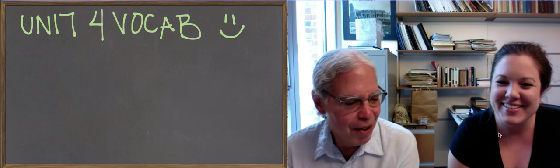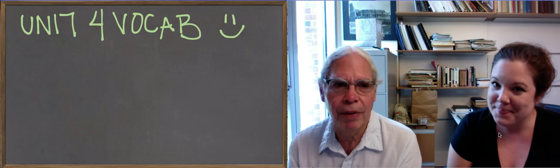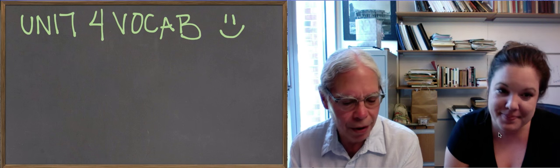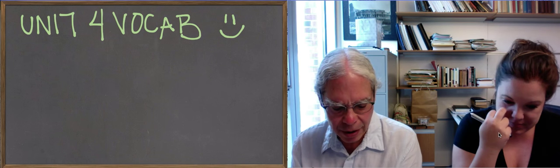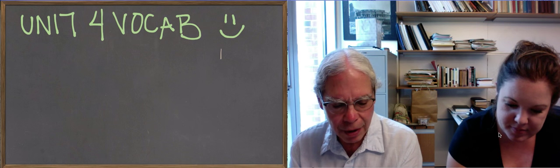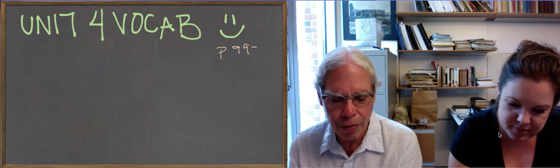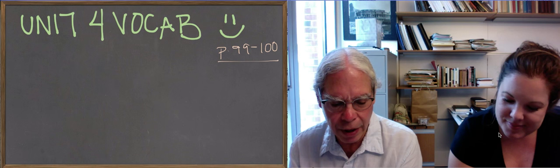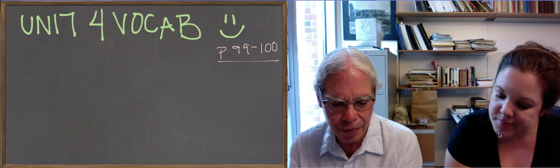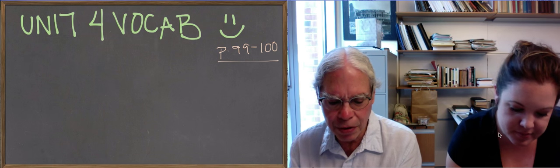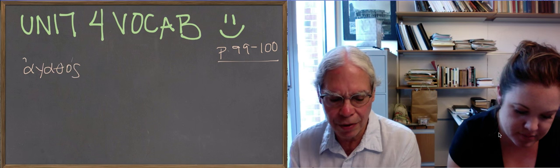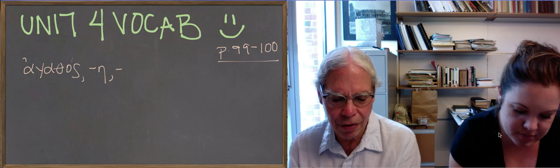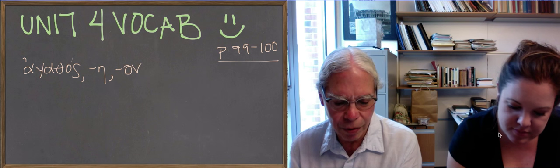Alright, so we're talking here about the vocabulary of unit 4, which is in Hanson and Quinn on pages 99 and 100. I'm just going to go through the words here. The first word is agathos, agathe, agathon, our first real adjective which means good. It means good in moral ways and in physical ways. It's the default word and the unmarked word for good.